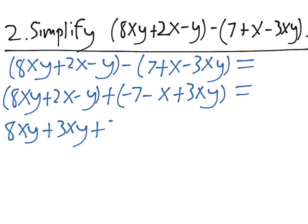Next, on the left, we have 2x, which matches with minus x on the right. And finally, we have minus y on the left and minus 7 on the right, which don't match with anything.